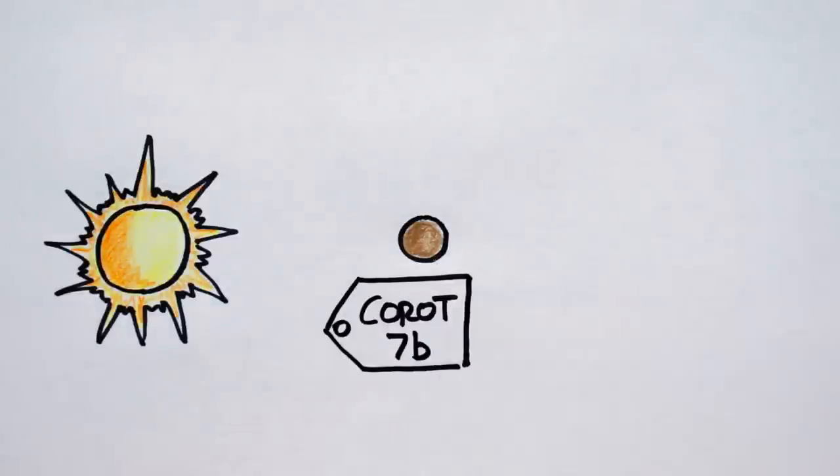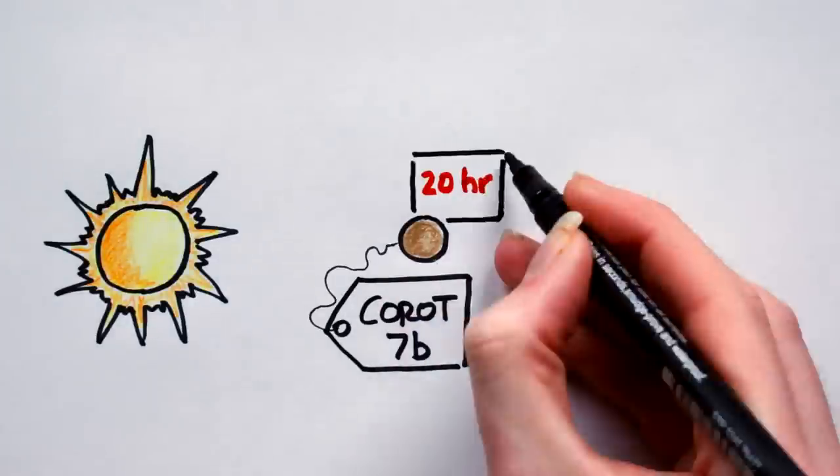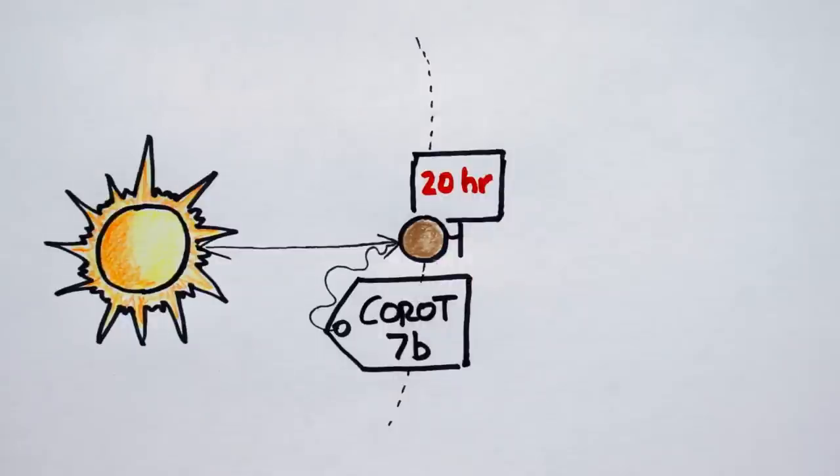Korot 7b orbits its host star every 20 hours, well inside our critical 3 day limit, so it could be classed a Chthonian planet. However, given the young age of the Korot 7 system, scientists think it probably isn't a dead gas giant.